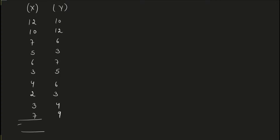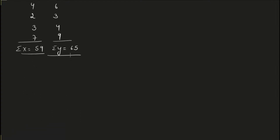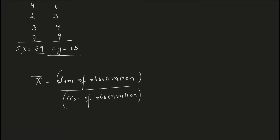The first step is to find the summation of X. When you add all the X values, the value you get is 59. Similarly, find the summation of Y — when you do that, the value you get is 65. Now we have summation of X and summation of Y. We need to calculate x̄ (x bar). The formula for mean is: sum of observations divided by number of observations. For the X data, sum of observations is 59.